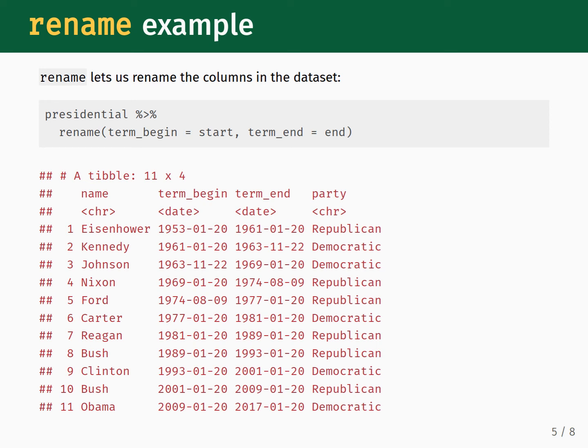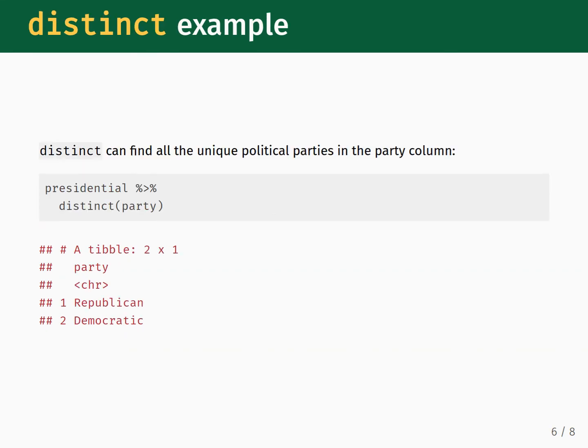Here we consider the distinct function. If we didn't know the different political party categories under the party column, we could use distinct to figure this out. We just need to pipe presidential into the distinct function, and then specify the column we want to check, which in this case would be party. The output tells us that there are two categories defined under the party column: republican and democratic.